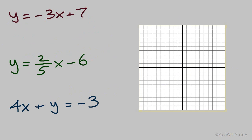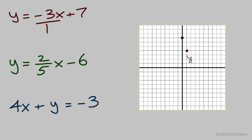Now here are three examples for you to try. Pause the video and graph all three of these equations, then restart the video and we'll go through the answers together. The first equation is solved for y. The y-intercept is positive 7. Our slope is negative 3, which is negative 3 over 1 — a vertical change down 3 for each horizontal change of positive 1. Down 3 and to the right 1. Now a straight line through those points. There's our first graph for y equals negative 3x plus 7.